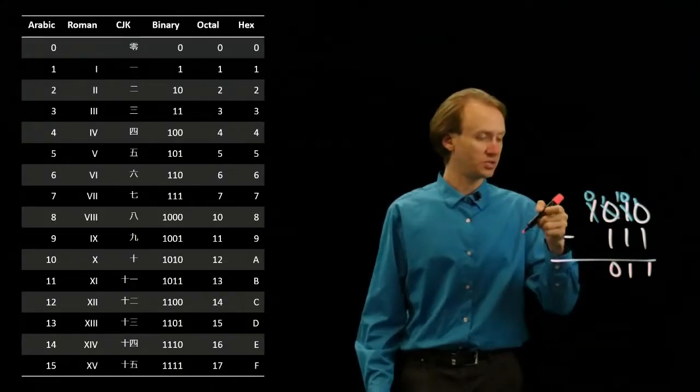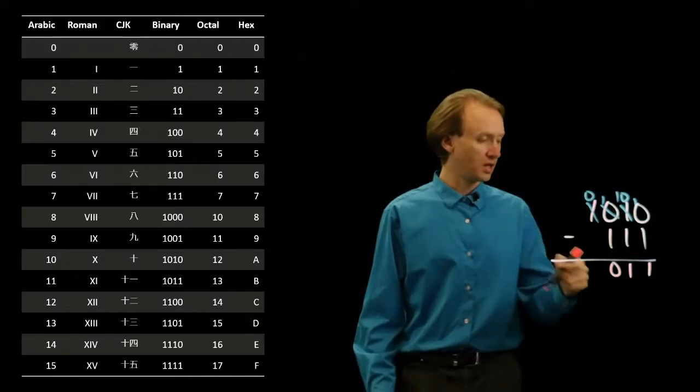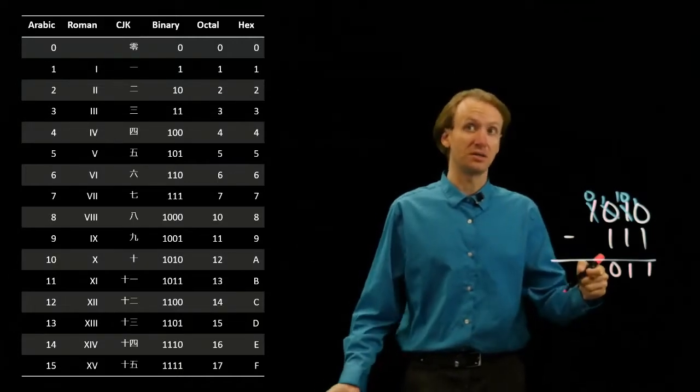So, we started with 10, we subtracted 7, and we're left with 3 in binary.